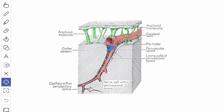The blood vessels on entering into the brain substance receive a tubular prolongation known as the perivascular sheath. The perivascular sheath extends up to the pre-capillary level and is filled with CSF, which probably damps down the pulsation of the arteries. The capillaries of the brain are separated from the nerve cells by a semi-permeable membrane known as the blood-brain barrier.